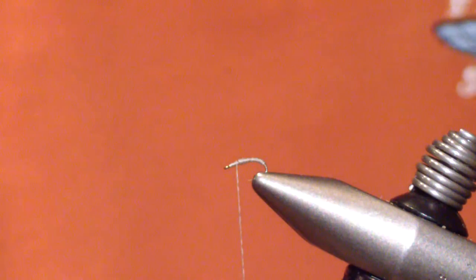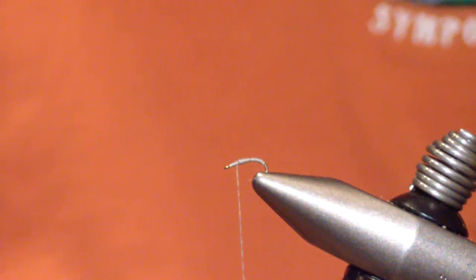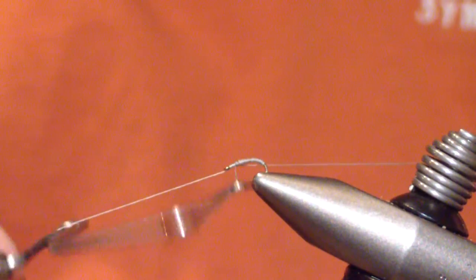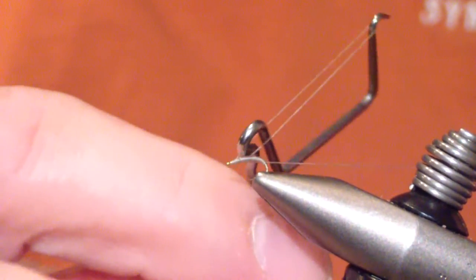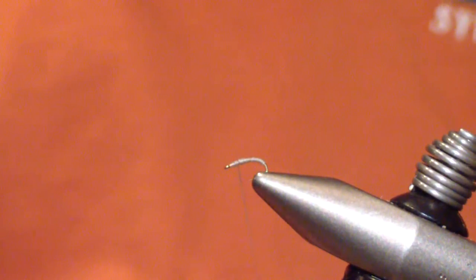At this point, I throw in a single whip finish, just to keep my thread in place. And I break out the bug bond. Just going to use a little drop of bug bond. We're not building the body up.